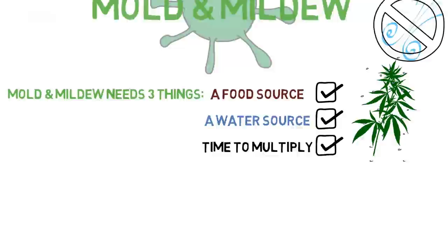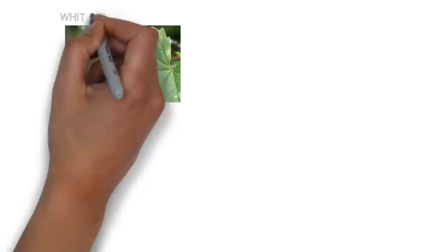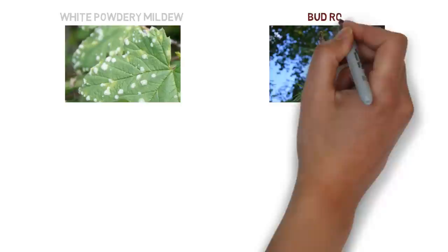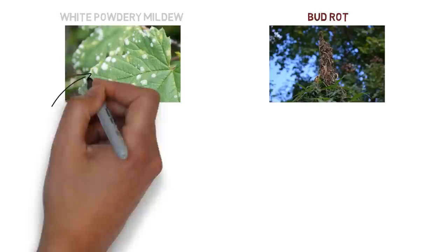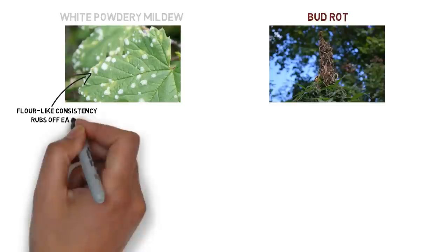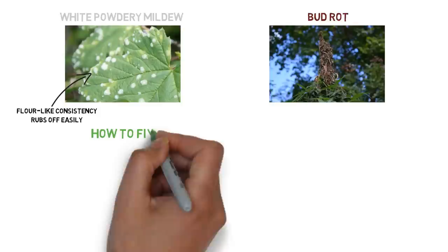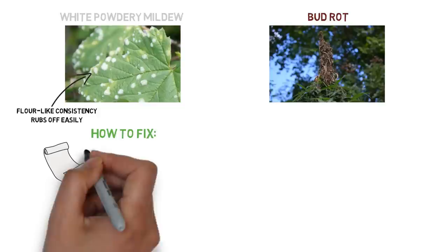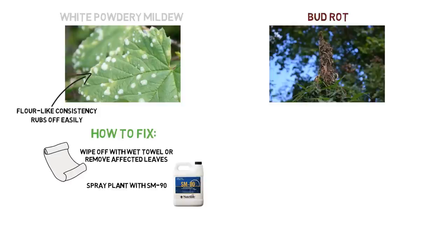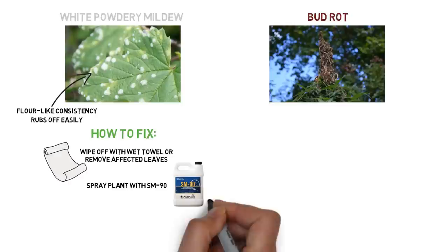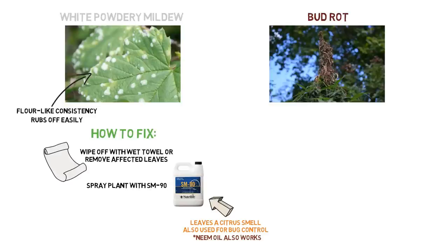The two most common types are white powdery mildew and bud rot. White powdery mildew is easy to identify — it looks like white or yellow flower-like patches that rub off easily, appearing first on leaves but migrating fast to stems and buds. If you notice this, wipe off affected areas with a damp paper towel, then spray the entire plant with SM90. SM90 is made from plant oils and inhibits common fungal and bacterial pathogens. Change the plant's environment by lowering humidity, increasing airflow, and thinning out dense foliage to prevent recurrence.